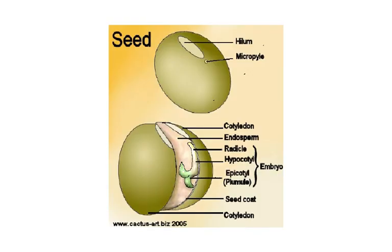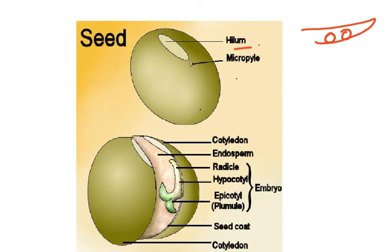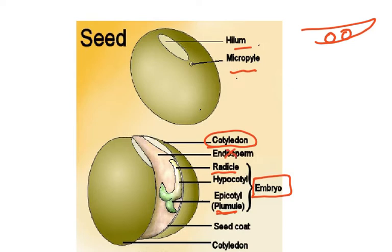Looking at the structure of a seed: the hilum is the place where it was attached to the pea plant. There's a tiny hole called the micropyle through which the pollen tube actually entered. The radicle and the plumule make up the embryo. Some seeds have endosperm as their main food store, but we're going to focus on the cotyledons. The outer covering is called the seed coat or testa, and the food store is the cotyledons.